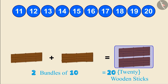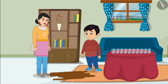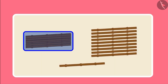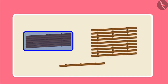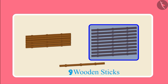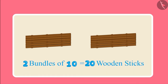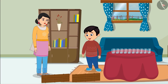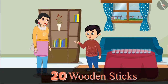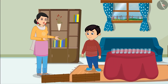So Choto, as soon as we have 10 objects, we make another bundle of 10 and count the remaining objects up to 9. As soon as we get another wooden stick after 19, we make another bundle of 10, which gives us 2 bundles of 10 — that means 20 wooden sticks. Yes, Choto, you are absolutely correct!